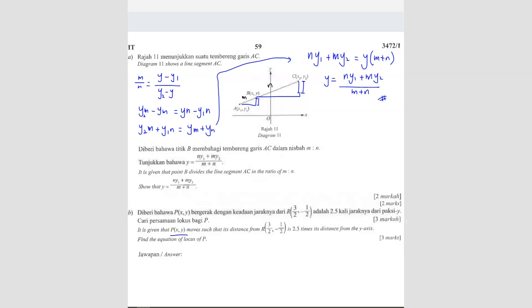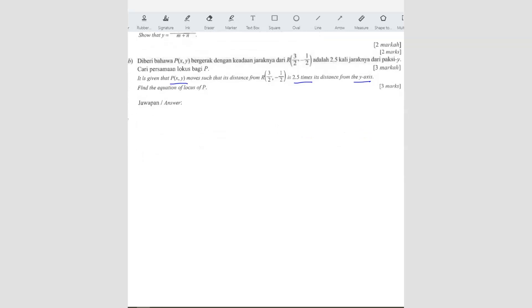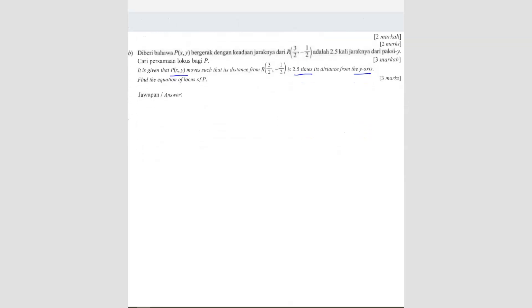It is given that this point moves such that the distance from R is 2.5 times the distance from the Y axis. Find the value of locus P. This question has got nothing to do with part B here. You got a graph and then you got, let's say this point R is going to be 3 over 2 here, and negative 1 over 2 is here. So this point R.